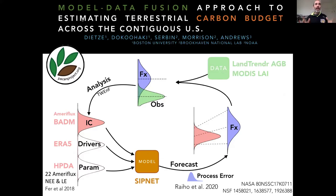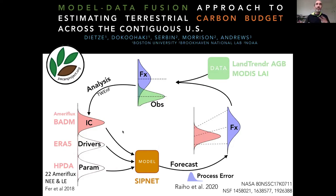Second, I want to emphasize how we're doing this, which is through model data fusion. The key part here is that we are using a primarily data-driven approach where we use models as scaffolds to reconcile different data sources together — essentially using models as giant covariance matrices to allow different parts of observations to communicate with each other and to share information.